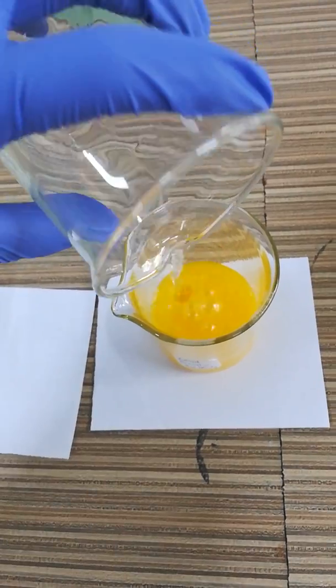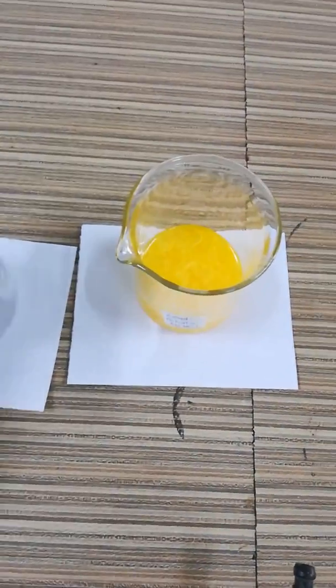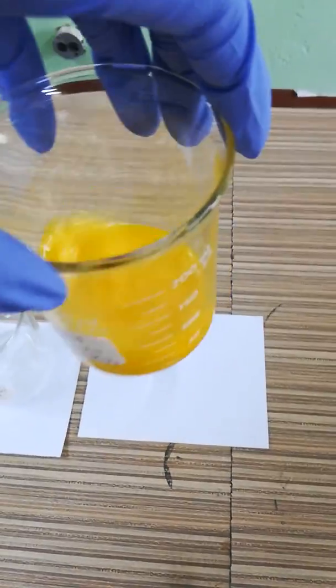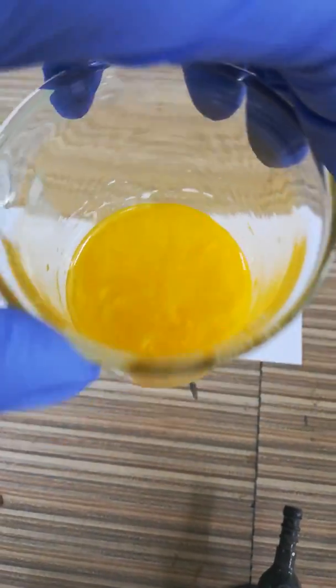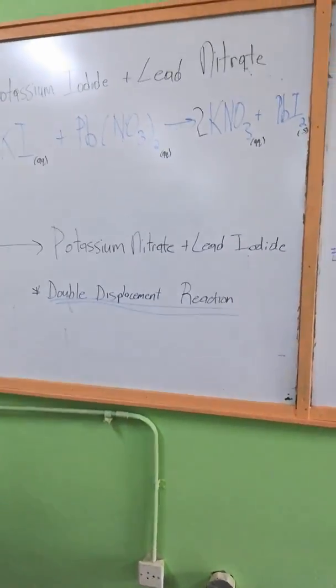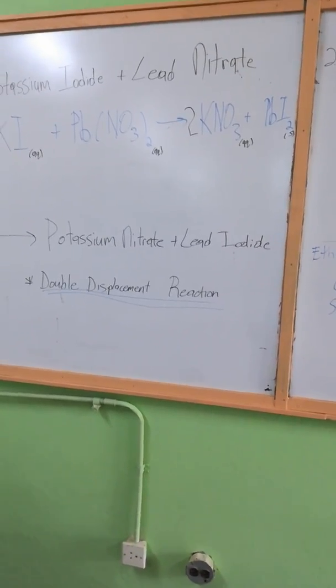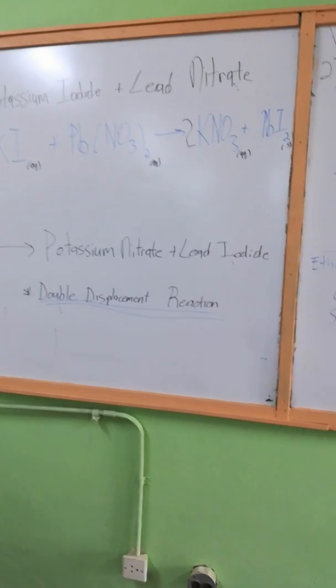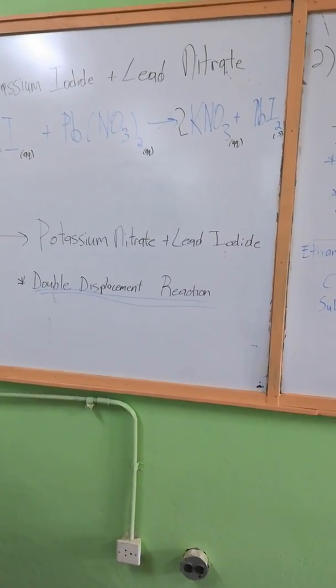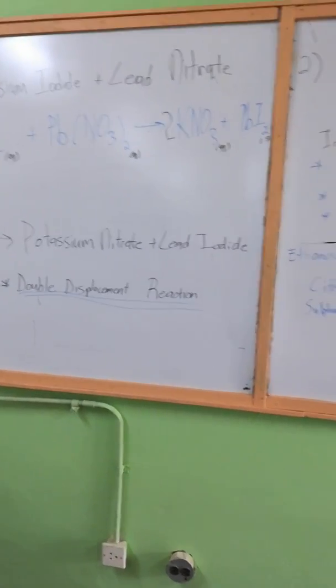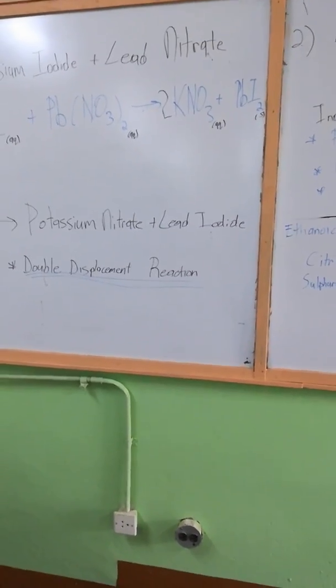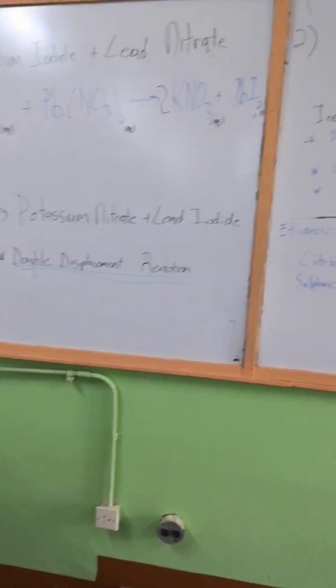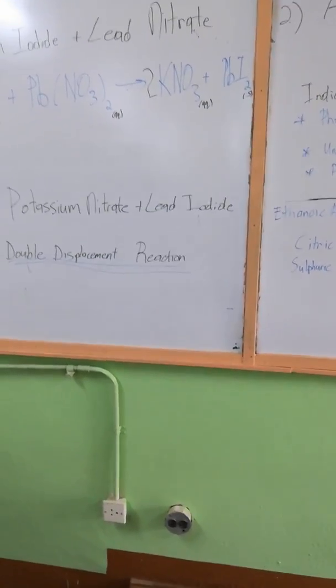Yep, that's nice. The new substances that just formed are potassium nitrate and lead iodide. It's a double displacement reaction where basically potassium replaced lead with nitrate, and lead displaced potassium and took the iodine to become lead iodide.